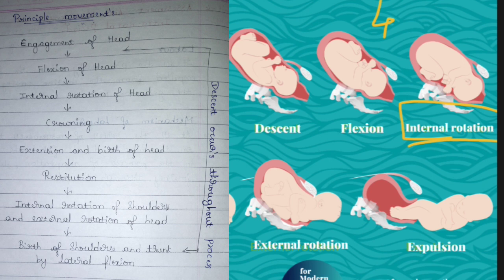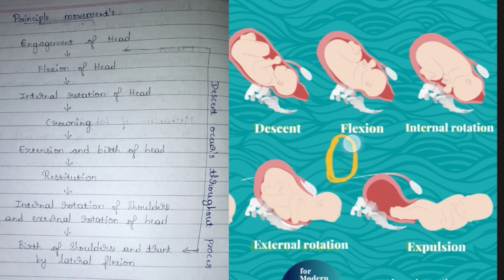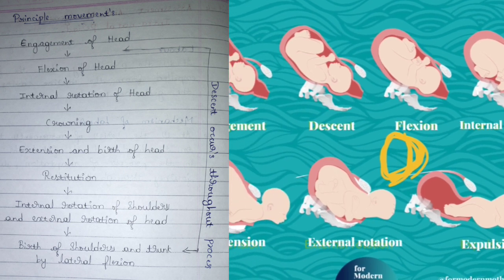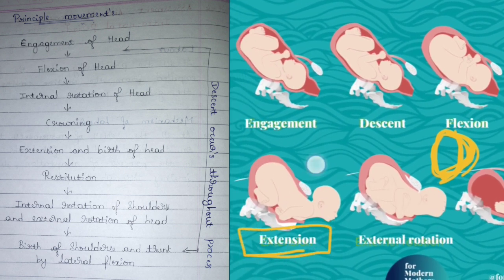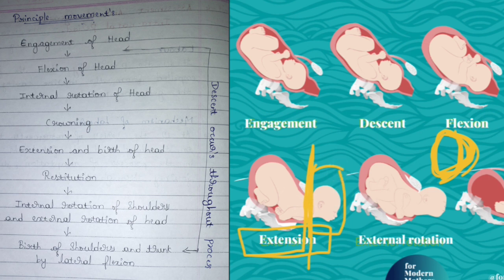After internal rotation, the next step is crowning — this is not listed in the principal moments here, but crowning means the fetus head is visible from outside the vagina. After crowning comes extension: the fetus head comes out from the mother's body. In this stage the sinciput, face, and chin are swept out from the mother's womb. This is known as extension, or the birth of the head.